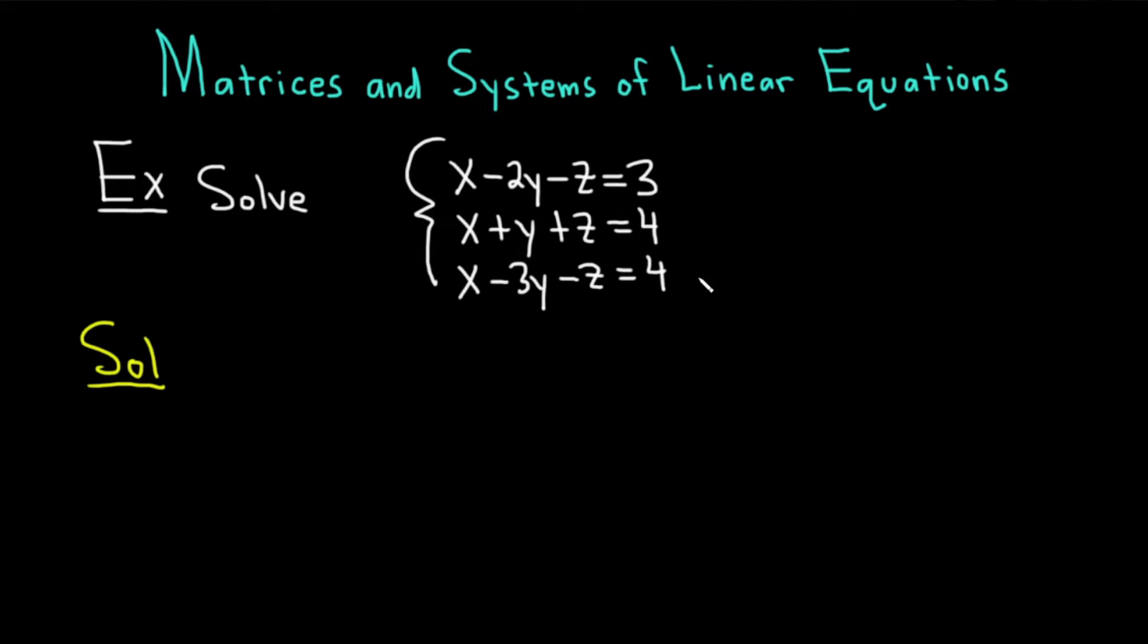So you start by basically taking your system of equations and putting it inside what's called an augmented matrix like this. You can use parentheses or brackets. I'll use parentheses. And you write down the coefficients. There's really a 1 here in front of the x. So 1 and negative 2.